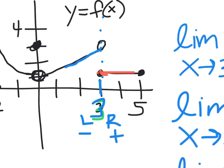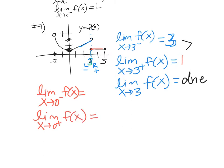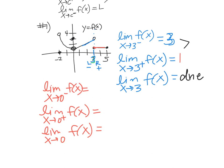This has a discontinuity right here. You're going to one value and I'm going to another — like someone's going to McDonald's and someone's going to Arby's and you're not meeting up. Now we're going to look at where x equals 0. We're ignoring x goes to 3 since we already answered those questions.